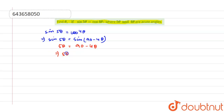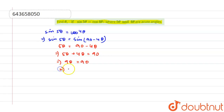That means 5θ + 4θ = 90°, or 9θ = 90°. That means θ = 90° ÷ 9 = 10°. And so this is the answer.